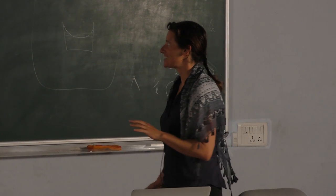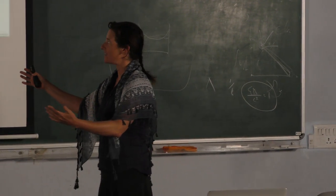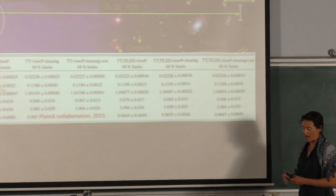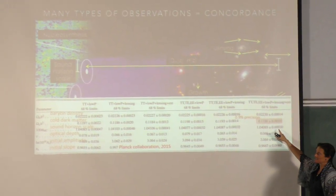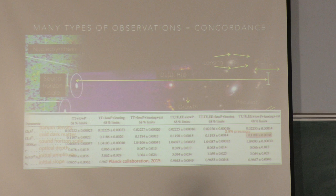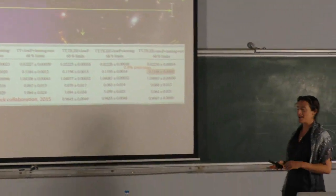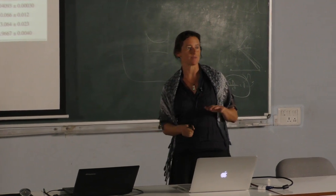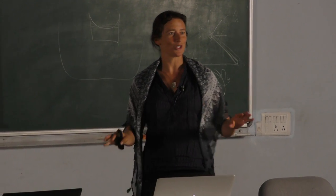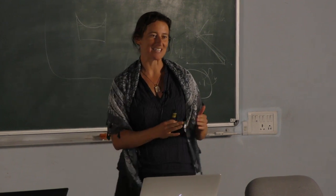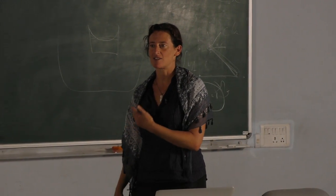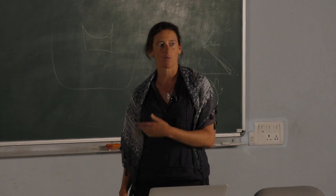This is data from the Planck collaboration on the six primary parameters in their base model. The numbers that you see here can change dramatically in different models. So just a reminder, everybody, never trust a number. Always make sure that you understand what model was used to derive it. But nevertheless, we are able to measure things and look for consistency of these models with very high precision now.